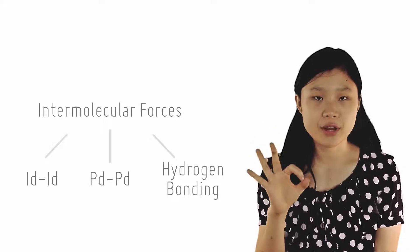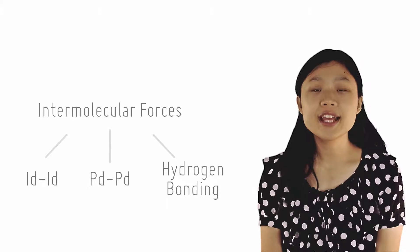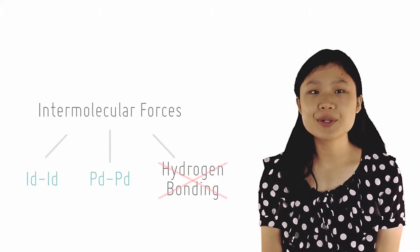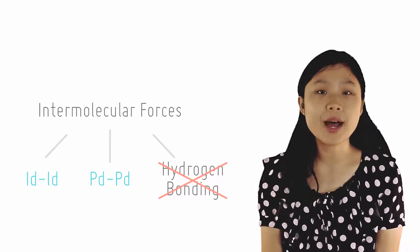There are three types of interactions: ID-ID, PD-PD, and hydrogen bonding. In the case of halogen alkanes, they experience both ID-ID interactions and PD-PD interactions but cannot form hydrogen bonds.